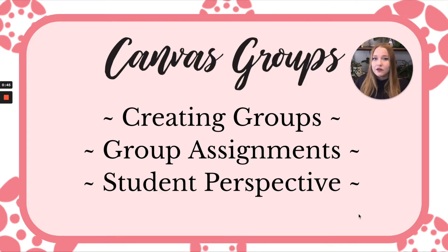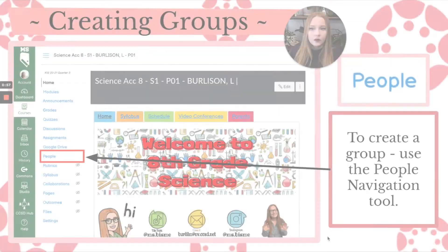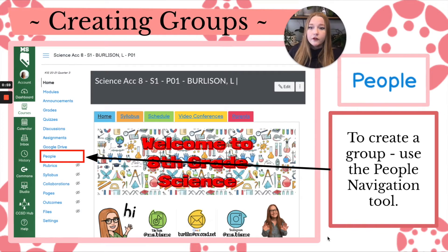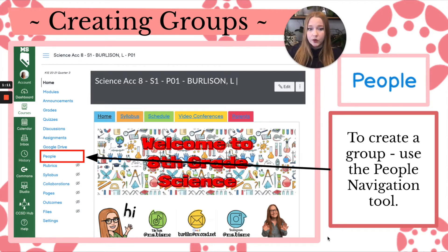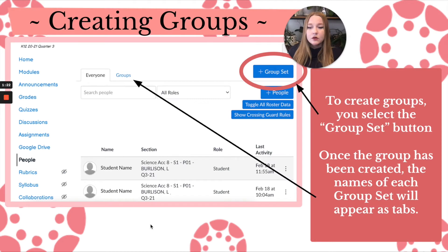How do students navigate into Canvas? How do they access their group and get to their group work? The first step in creating a group is entering your course and going to the People navigation tool in your course navigation bar. Click on that, and it will take you to this page where you see the list of people in your course.